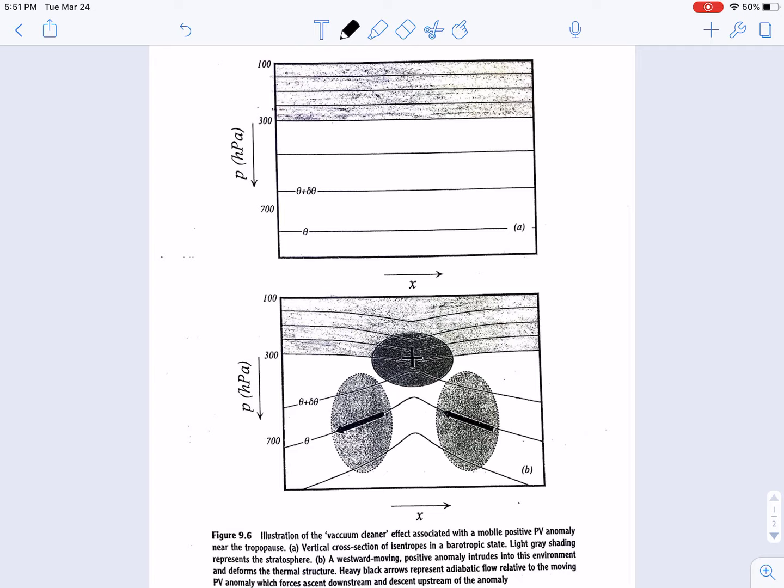So in this figure, which comes from Mid-Latitude Atmospheric Dynamics by Jonathan Martin, we want to consider what happens to the atmosphere if we impose a positive PV anomaly, which is illustrated here in figure 9.6b within this barotropic atmosphere, which is given in A.